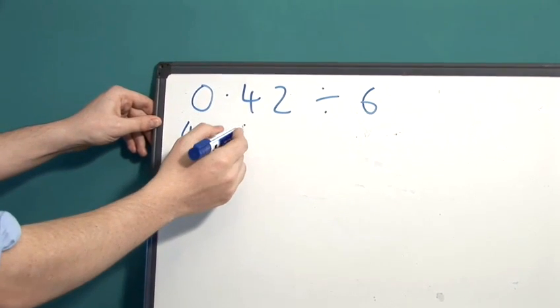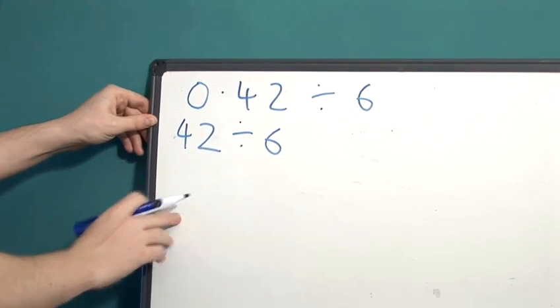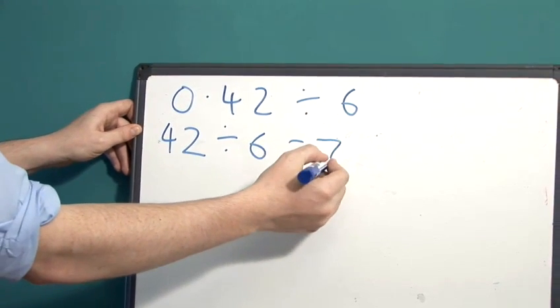Now, we have 42 divided by 6, which is a very simple division, equal to 7.